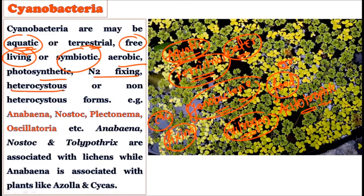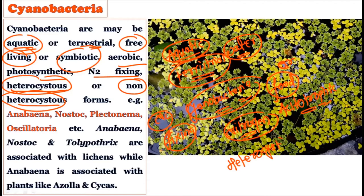Sometimes a heterocyst may be present, sometimes not — so there are non-heterocyst forms too. These heterocysts are cells responsible for trapping nitrogen. Examples of cyanobacteria include Anabaena, Nostoc, Plectonema, and Oscillatoria.